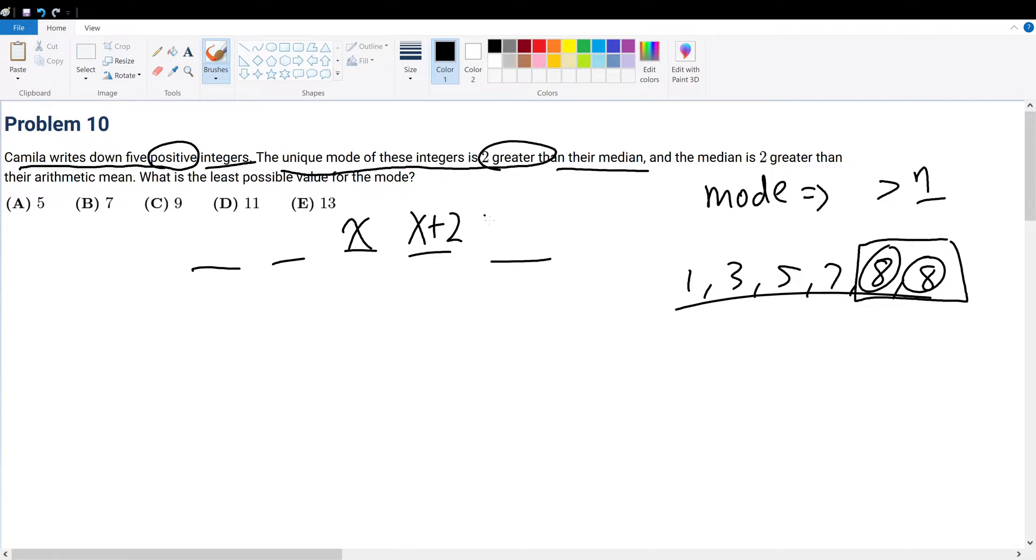The mode is 2 greater, so it must be on the right of x. But if this were only occurring once, then there would be no mode. Because from this example, we showed you why that's the case. So if there must be at least one of it, then there must be another x plus 2 in the fifth term. Otherwise, we would have a mode that could potentially occur right here, and that's not the case. We want it to be occurring right here. So therefore, we must have at least two x plus 2s.